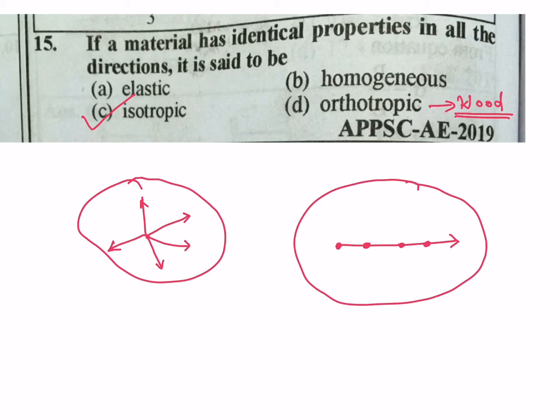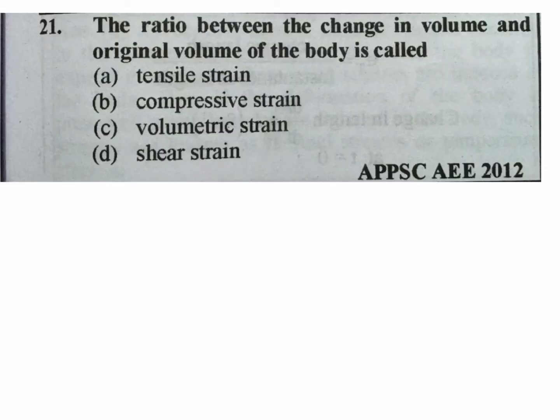Anisotropic material is also important — it has direction-dependent properties. That is the key characteristic of an anisotropic material.